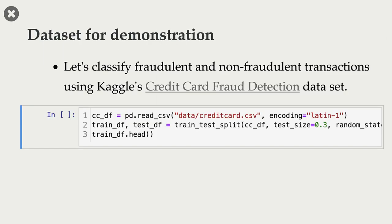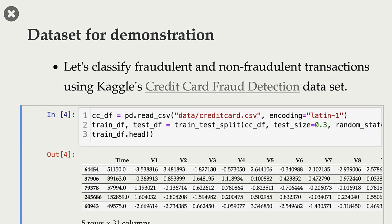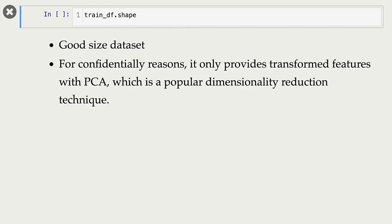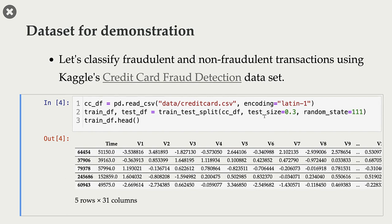In this particular lecture, we are going to work with Kaggle's credit card fraud transaction dataset. The prediction task here is classifying fraudulent and non-fraudulent transactions. As usual, I have downloaded the dataset from Kaggle. I'm reading the CSV. Next thing is I'm splitting the data. Remember, we always split the data before doing anything with it. And here are the first few rows from our data.